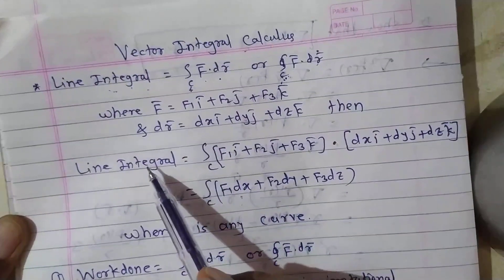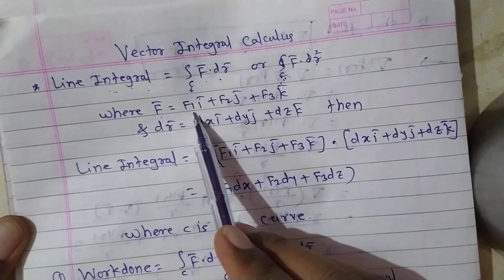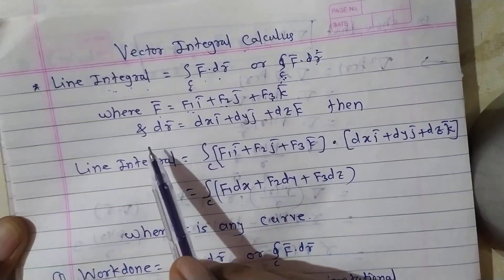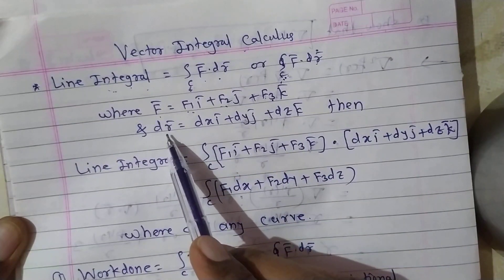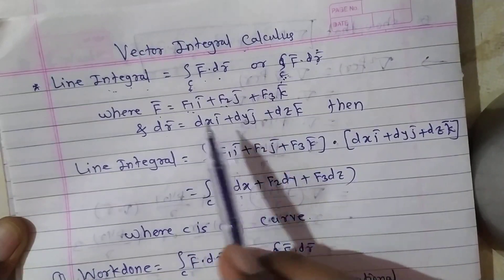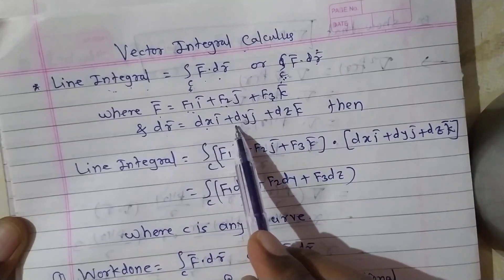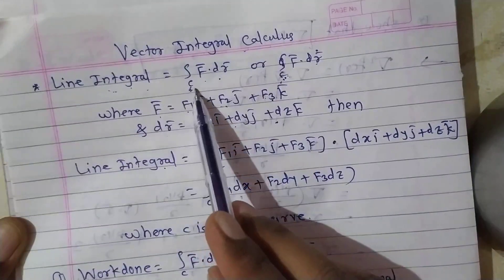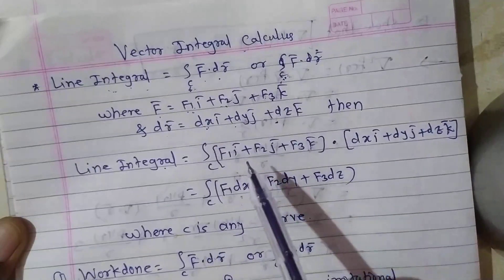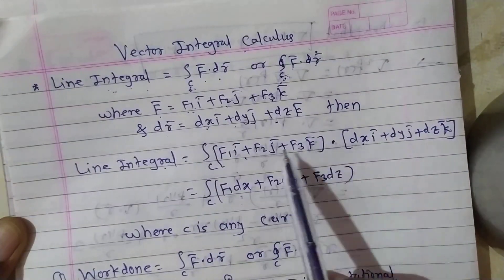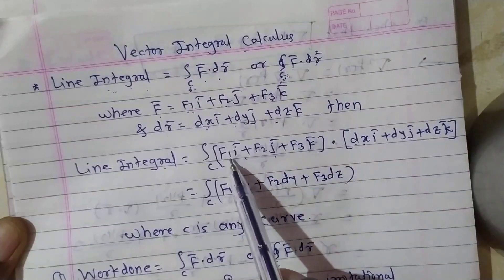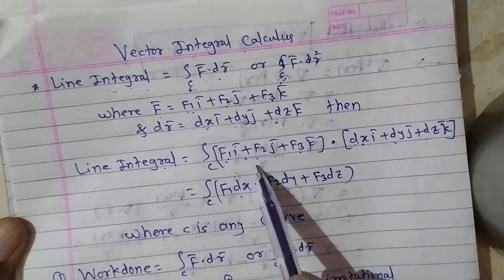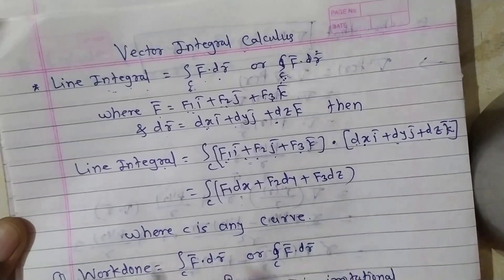Now, how do we write f̄·dr̄? Suppose f̄ is any vector field, say f₁ī + f₂j̄ + f₃k̄, where f₁, f₂, f₃ are functions of x, y, z. We know that r̄ is the position vector: r̄ = xī + yj̄ + zk̄, so dr̄ = dxī + dyj̄ + dzk̄. The line integral over c of f̄·dr̄ can then be written as the integral over c of f₁dx + f₂dy + f₃dz.